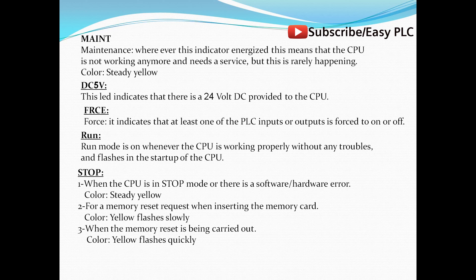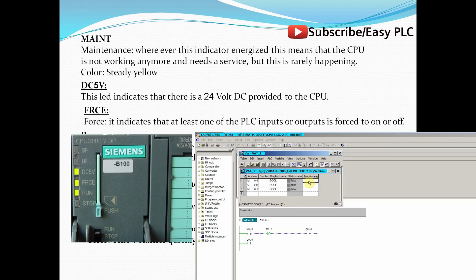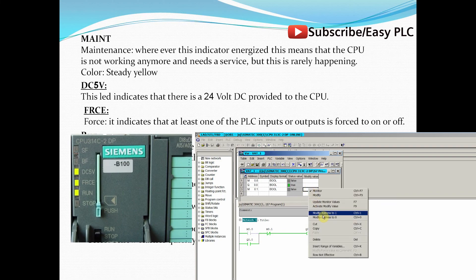DC 5V LED: This LED indicates that there is 24V DC provided to the CPU. Force LED: It indicates that at least one of the PLC inputs or outputs is forced to on or off.